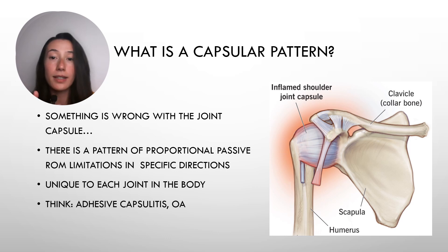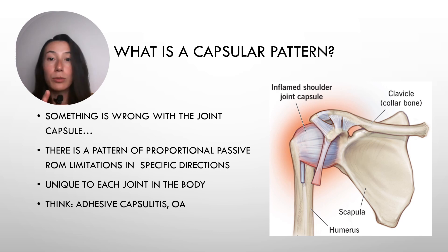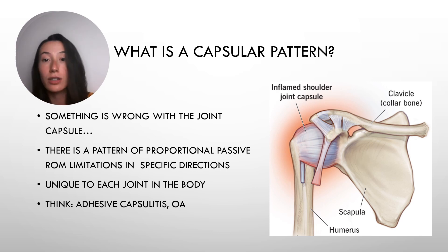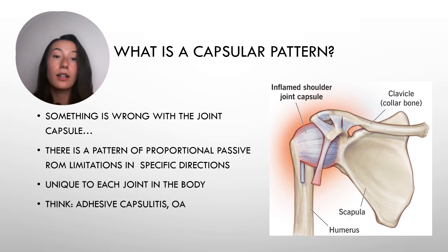Let's say something has happened to the joint capsule — it's irritated. It could be something like rheumatoid arthritis, osteoarthritis, or an infection. It doesn't matter. Just know that the joint capsule is affected.